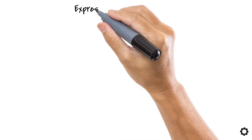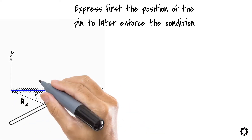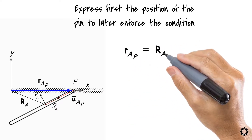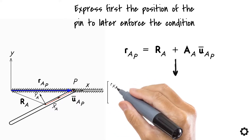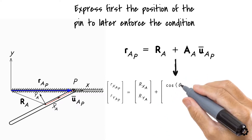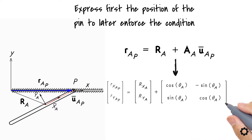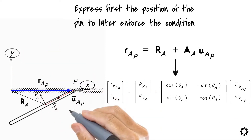We need to express first the position of the pin to later enforce the condition. The position of point P of the pin defined in the inertial reference system is R_AP equals R_A plus A_A times U_bar_AP. Transforming this vector equation into its scalar version, we get two scalar equations representing the components in the axes x and y from top to bottom respectively.